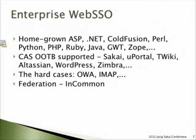There are also plenty of homegrown applications — everything from ASP to Zope and everything in between — that you might want to bring into the Web SSO domain. One of the nice things about CAS is that it's been around for quite a while and has good out-of-the-box support for a number of applications deployed on campuses, including Sky, Uportal, WordPress, Zimbra, and many others. Of course there are harder cases like Outlook Web Access and IMAP where you may not have the ability to integrate directly with Web SSO, so you may need to take other approaches.